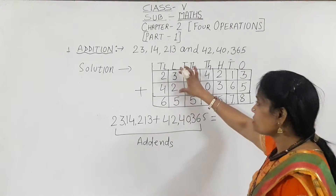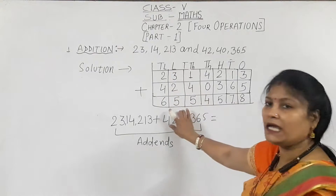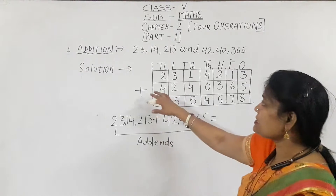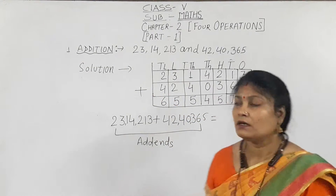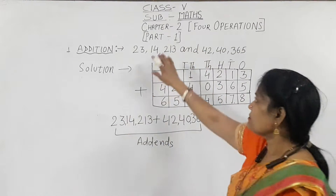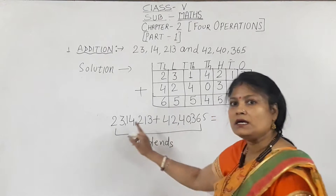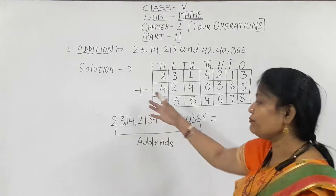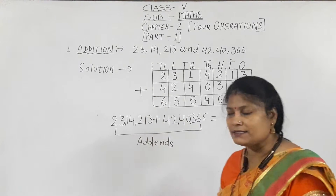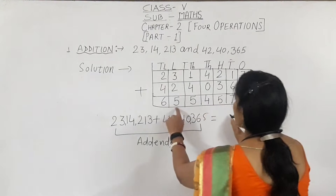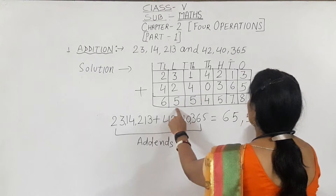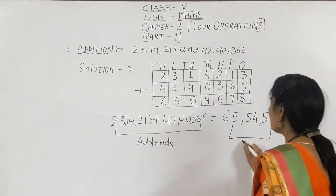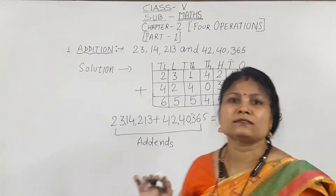These two numbers are given to us, and this is my addition — this is my sum, this is my solution. The question asks: which ones are the addends? Addend means the numbers that we have to add — this number and this number. Both numbers are called addends — the numbers we are adding are known as addends.